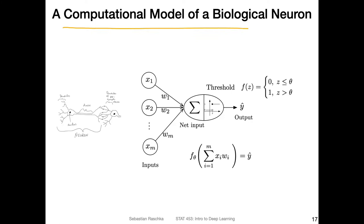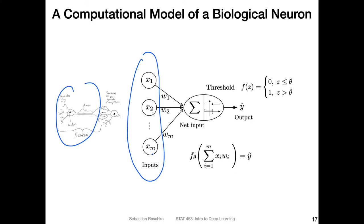Now we have a computational model of a biological neuron. On the left-hand side is the biological neuron, and on the right-hand side is the computational or mathematical representation based on McCulloch and Pitts' idea — that is also the model we'll use in the perceptron. The perceptron learning rule then learns the parameters of this model. What we have here are the inputs x1 through xm — think of it as a feature vector, for example from the iris dataset.